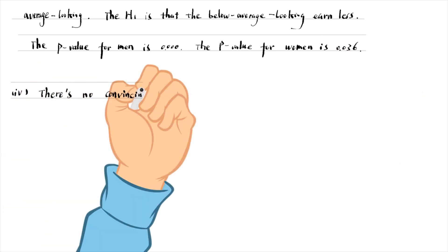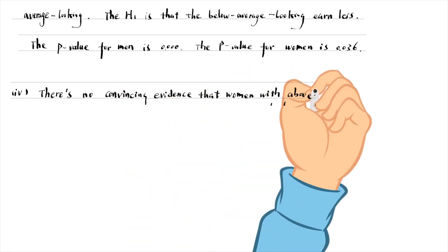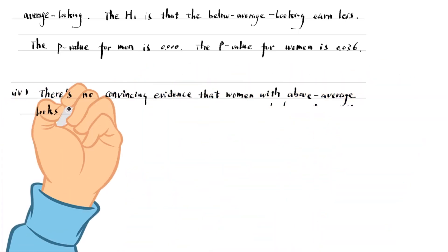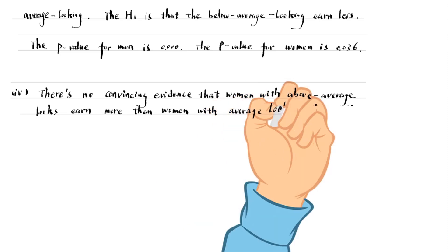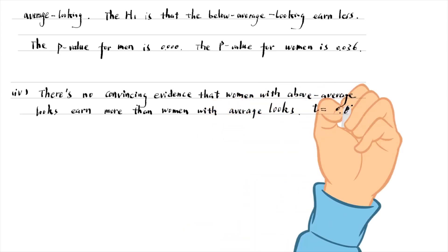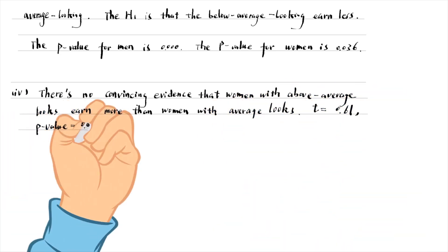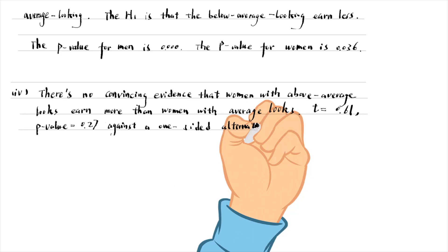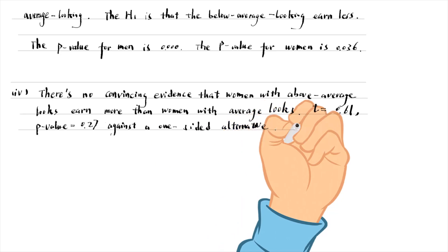For part 4, there is no convincing evidence that women with above average looks earn more than women with average looks. The t-statistic is 0.61 and its p-value is 0.27 against a one-sided alternative. The wage difference is not statistically significant at even the 20% level.